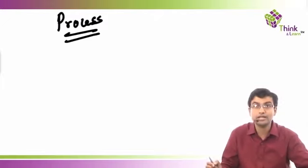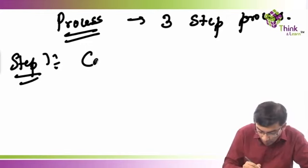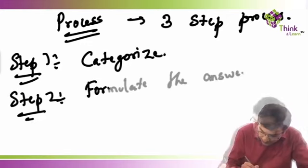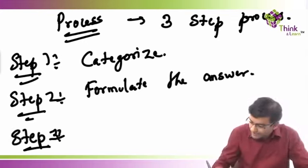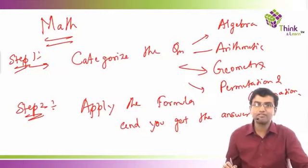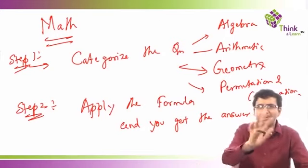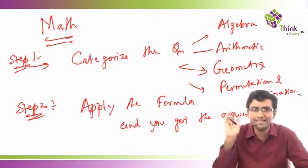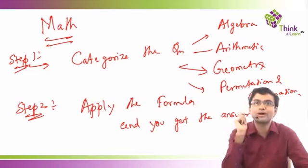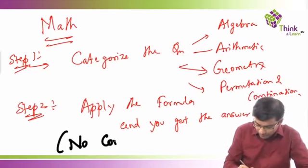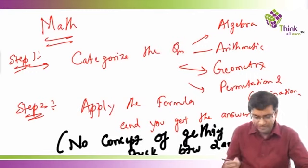A very similar process we are going to follow in RCs. Before we start answering different types of questions, let me explain the process. It is a three-step process. Step one: I will teach you how to categorize the question. Step two: formulate the answer — I want you to formulate the answer, not guess it. Step three is an additional step compared to mathematics. In mathematics you categorize, apply the formula, and get the answer with one answer choice. You don't have to eliminate any answer choices, and there is no concept of getting stuck between two answer choices.